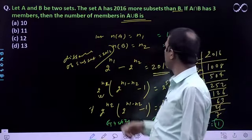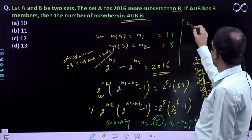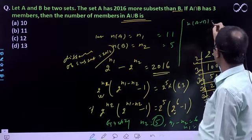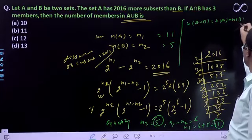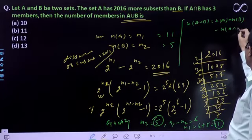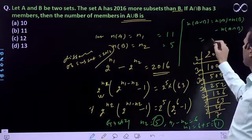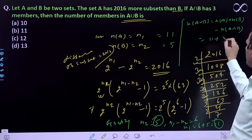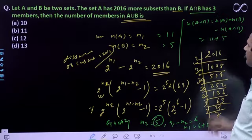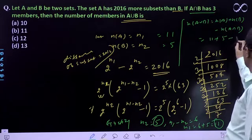We need to find A union B. The number of elements in A union B equals n(A) plus n(B) minus n(A intersection B). So n(A) is 11, n(B) is 5, and A intersection B has 3 members, so minus 3.